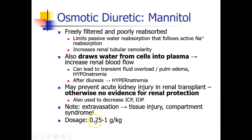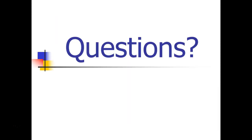A typical dosage of mannitol is somewhere between 0.25 and 1 gram per kilogram. Usually it's given over about 15 to 30 minutes, but it can be given faster if necessary. That's the end of this recording — please let me know if you have any questions and we'll see you in the next video.